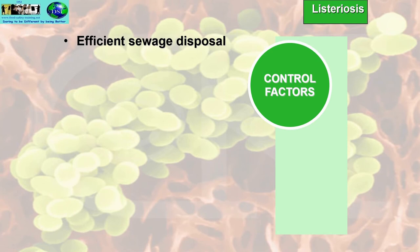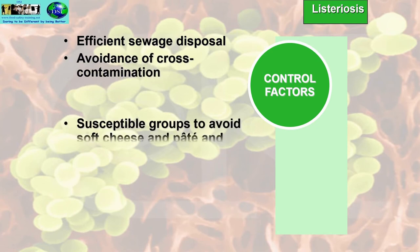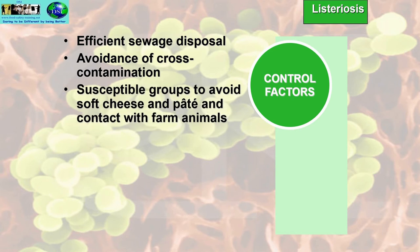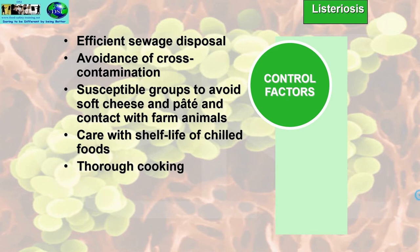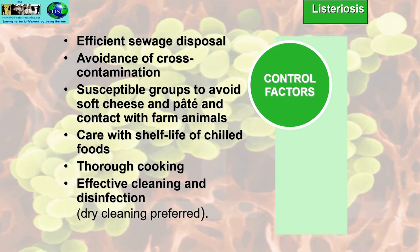Control factors for Listeria include efficient sewage disposal, avoidance of cross-contamination, susceptible groups avoiding soft cheeses and pâtés, and avoiding contact with farm animals. If petting farm animals, always wash your hands afterwards — especially with young children and the elderly, as they could cross-contaminate by touching their mouths. Other controls include care with shelf life of chilled foods, thorough cooking, effective cleaning and disinfection — dry cleaning is preferred.